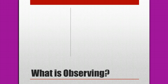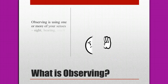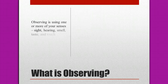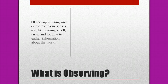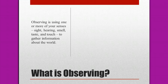What is observing? Observing is using one or more of your senses — sight, hearing, smell, taste, and touch — to gather information about your world. For example, we all know that we have blackboards in our classrooms, we hear bells ring, we can smell smoke, we can taste whether a piece of fruit is sour or sweet, and we can feel the smooth desktop. These are all observations.